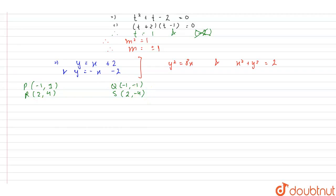So here we get the equation of the line PQ as x = -1 and the line RS as x = 2. Now the area of the quadrilateral PQRS is